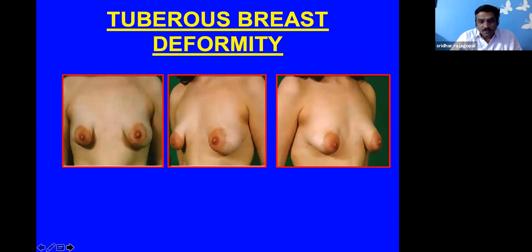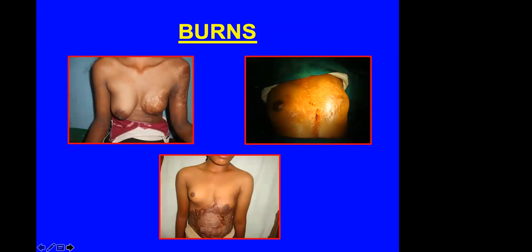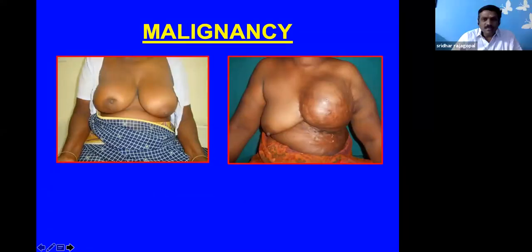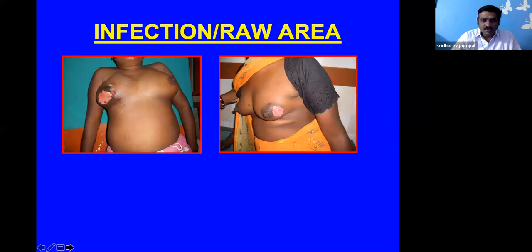Tuberous breast deformity is where the breast has developed in a different pattern and people would like a better appearance. Burns will also destroy the breast — partial or complete, in different age groups, more often with self-immolation being the common cause, seen in young women who want breast reconstruction. Malignancy can be unilateral or bilateral at different stages. In developing countries, infections and raw areas also require reconstruction.